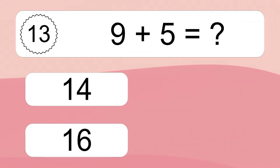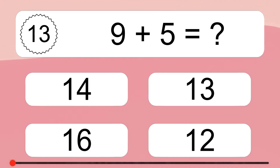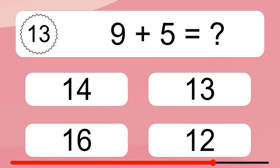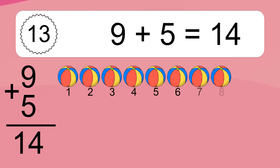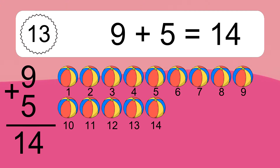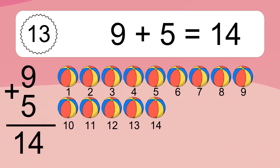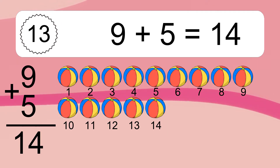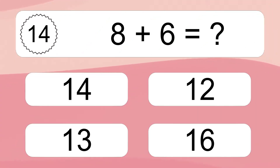Nine plus five equals what? Nine plus five equals fourteen. Let's count it: one, two, three, four, five, six, seven, eight, nine, ten, eleven, twelve, thirteen, fourteen.